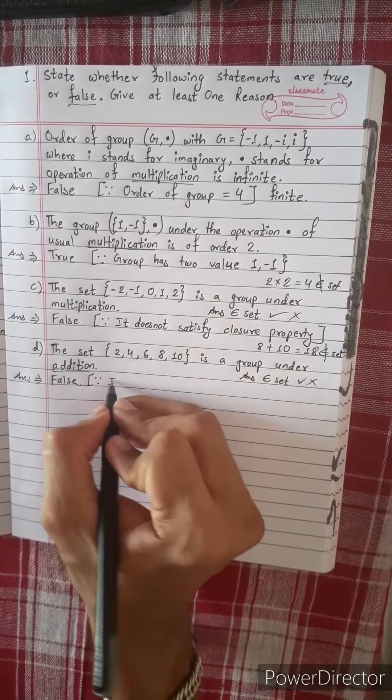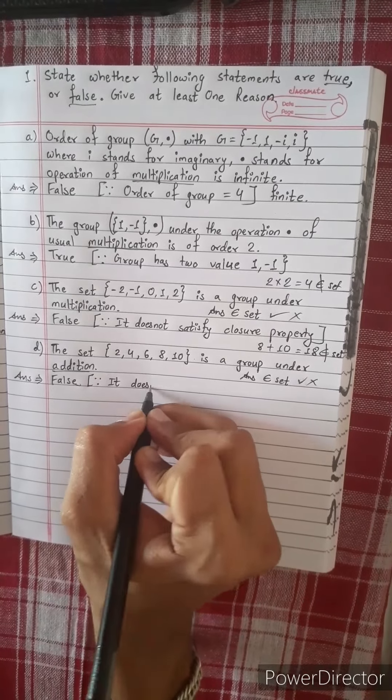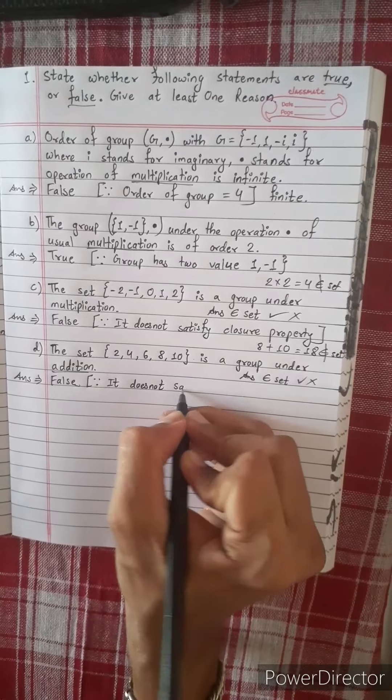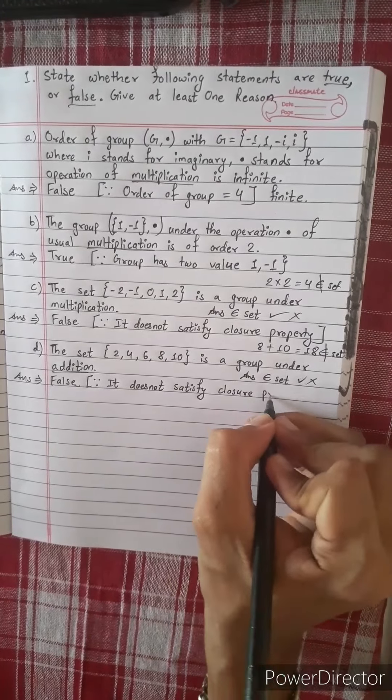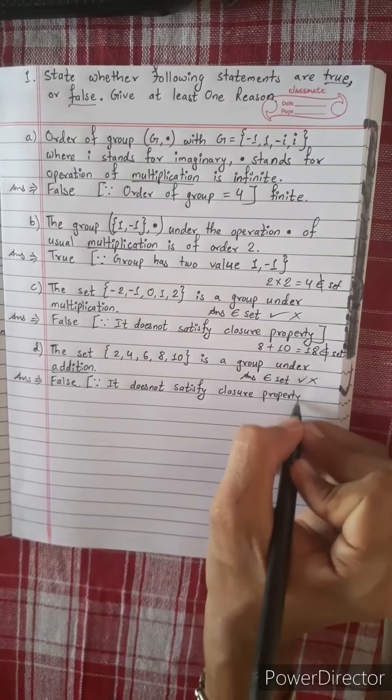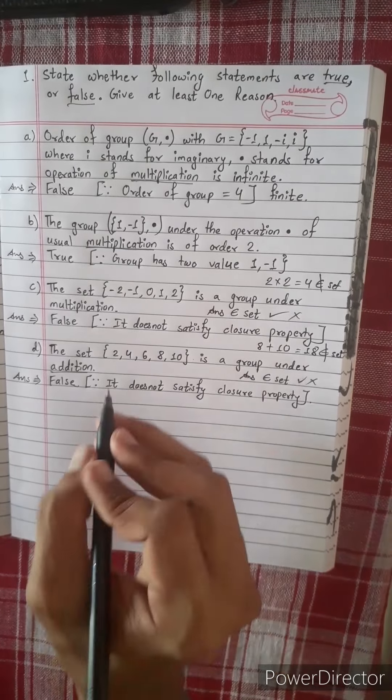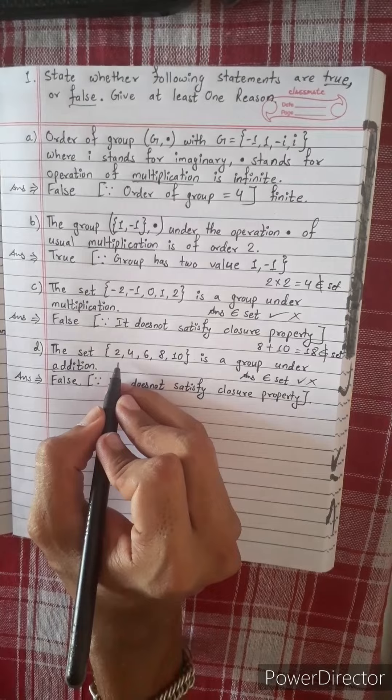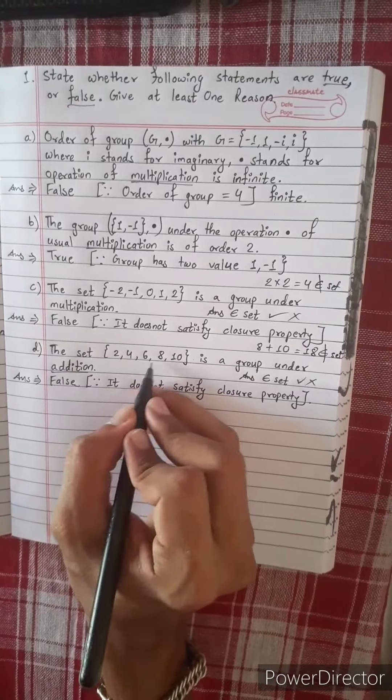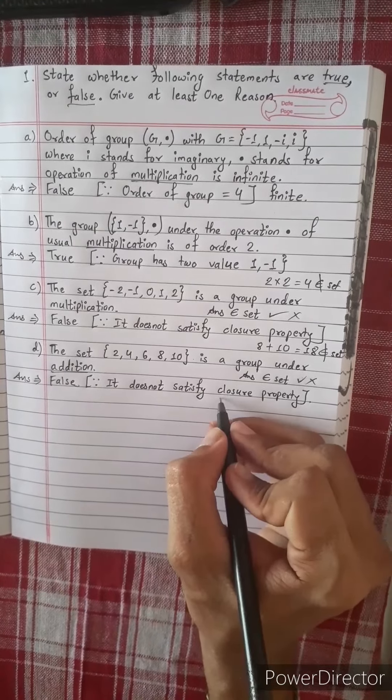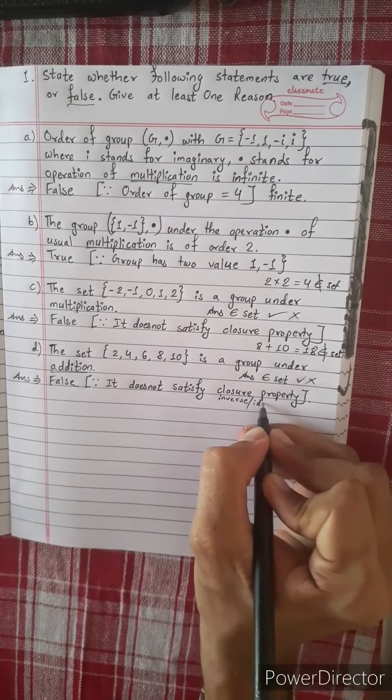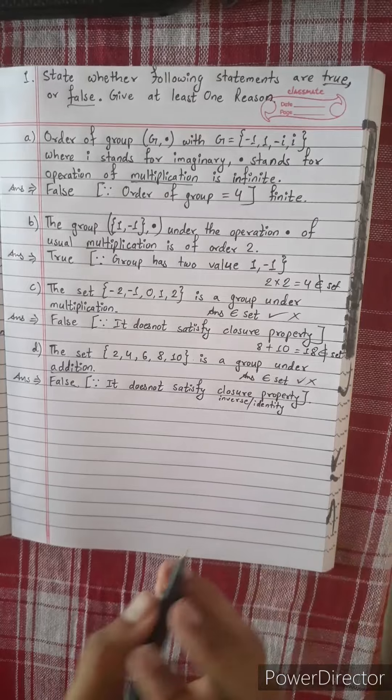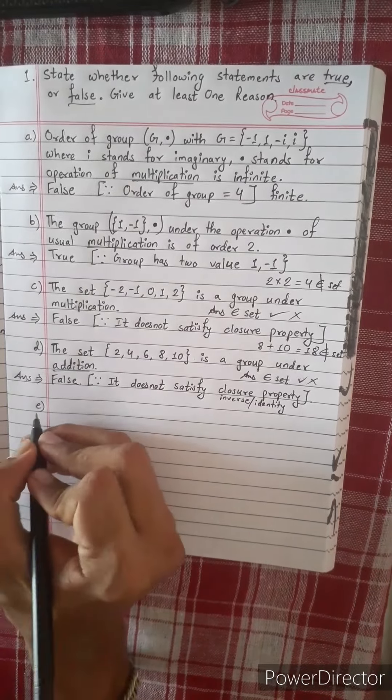It does not satisfy closure property. This is the identity and inverse. It does not satisfy inverse, identity. This is the property. The property is the same. Now the number.